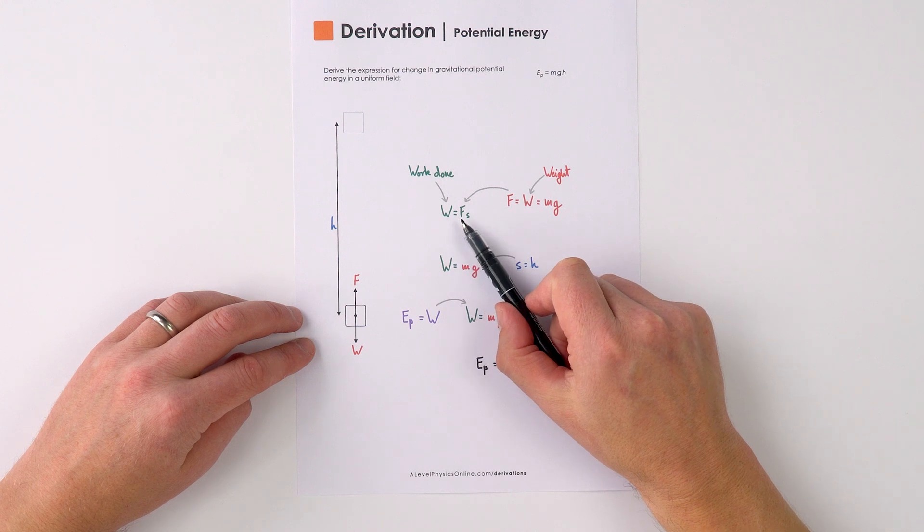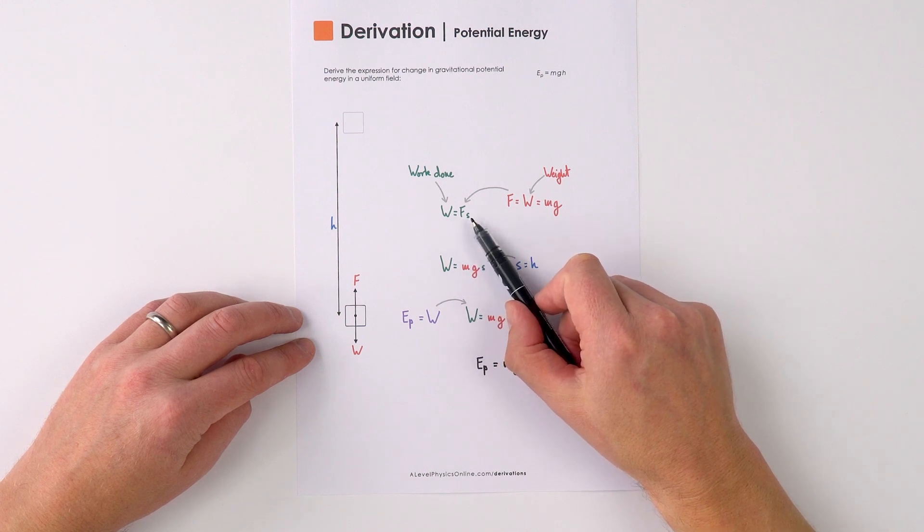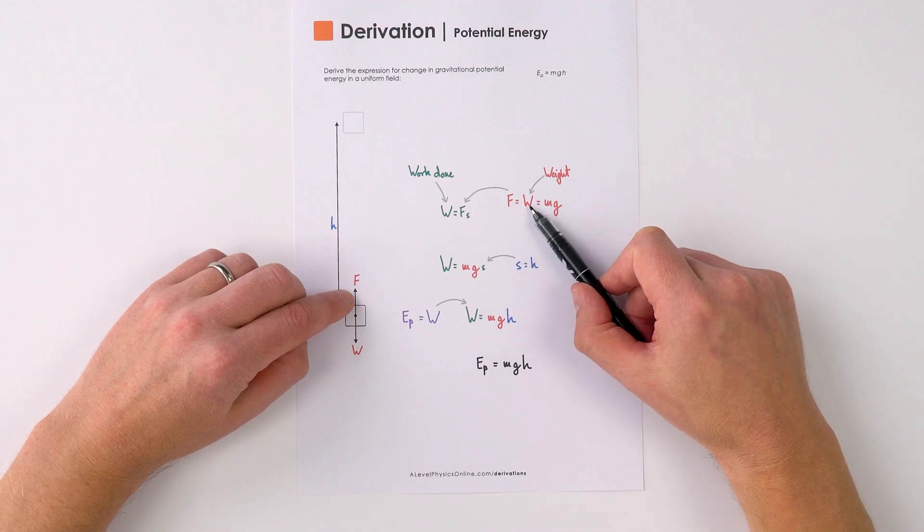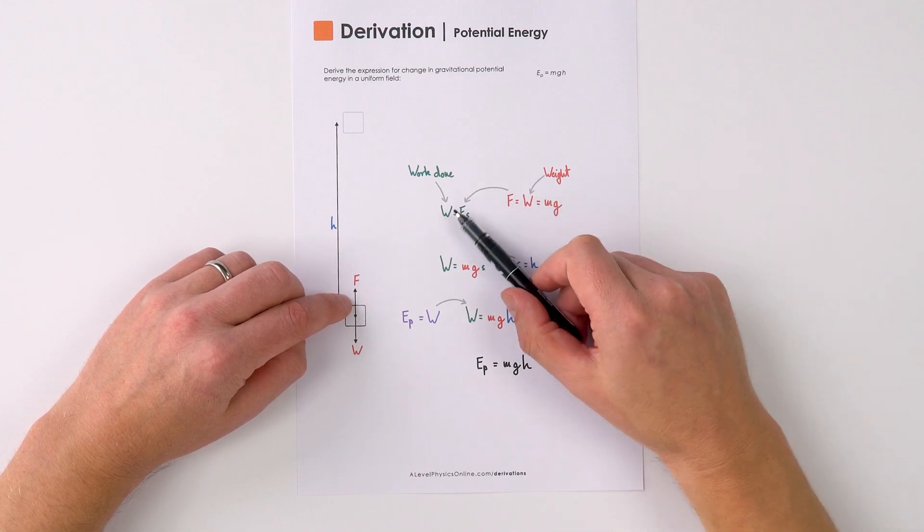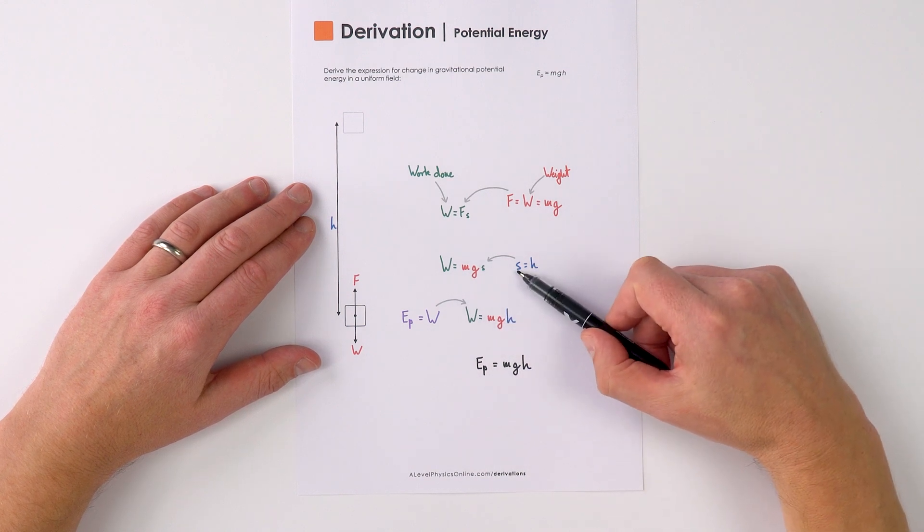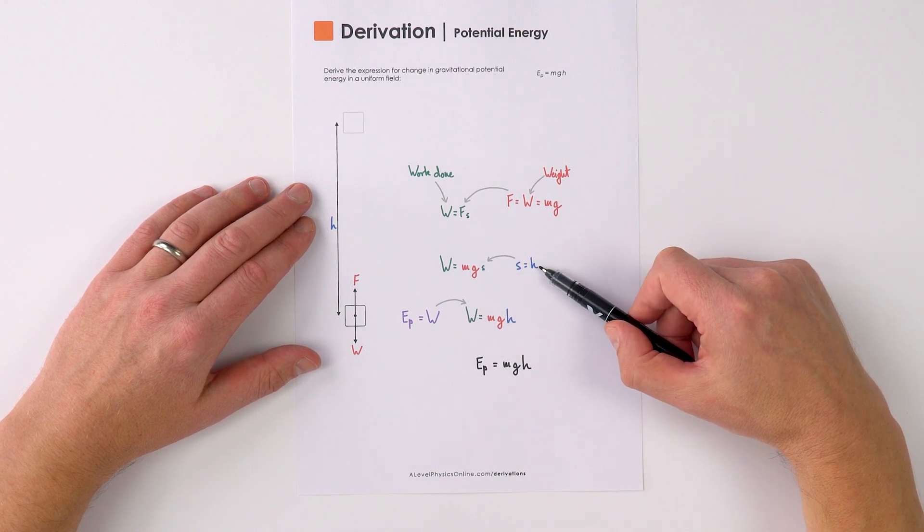Here the work done is equal to the force times the displacement. Now the force on that object is equal to its weight which equals mg, and therefore we can say that the work done is equal to mgs and here that displacement is just the vertical height h.